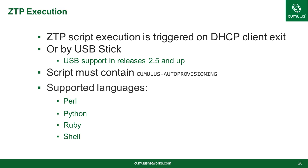ZTP picks up where ONIE left off. There are two ways to use ZTP: one is via DHCP and the second is via USB. The script executes as root and does not execute until it sees the cumulus auto-provisioning flag — the flag is necessary. For example, if you're downloading a file from the web server by accident, ZTP downloads the file and looks for that flag to know that it's an auto-provisioning script.